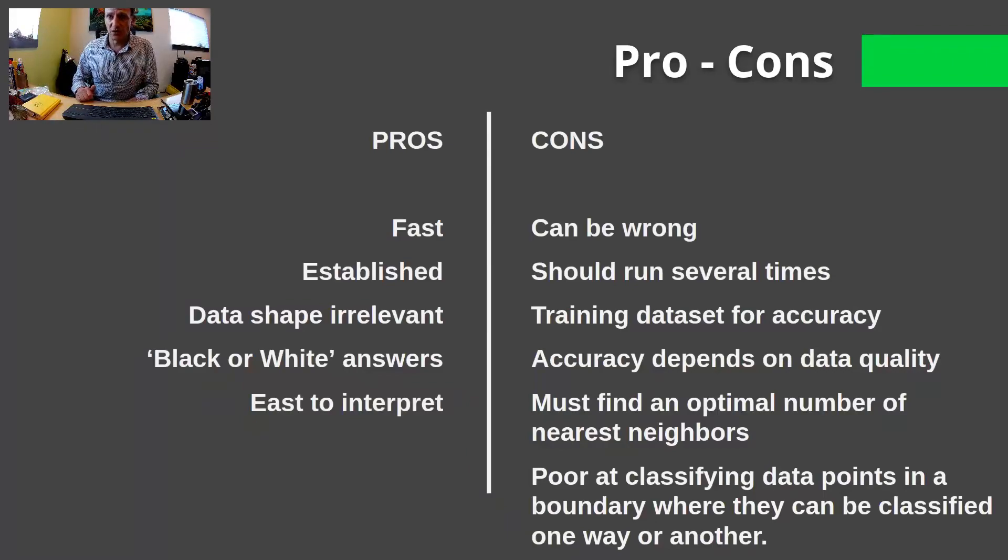The accuracy depends on the data quality. If you have data that's all over the map, the KNN will have a very difficult time coming with the classification. So, with KNN, you also must have an optimal number of neighbors. If you have two data points, and you're trying to classify, it's very difficult. If you have thousands of data points, it's a lot easier. And KNN is also very poor at classifying data when it falls in the middle.